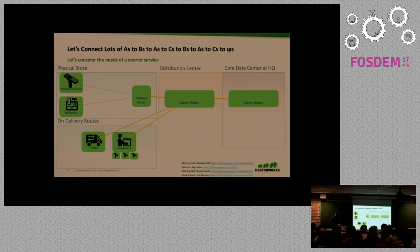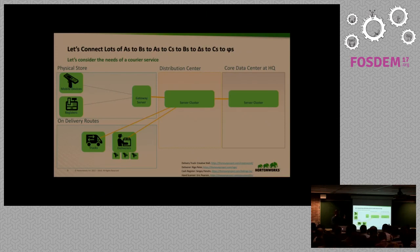Let's look at a model of a courier service — DHL, the big one over here. We've got mobile devices, everybody has a scanner, they're scanning packages as they deliver them. There are registers in the store where we're accepting and delivering parcels, we have trucks and delivery drivers, and all this goes to a gateway server in each store and up to a distribution center.